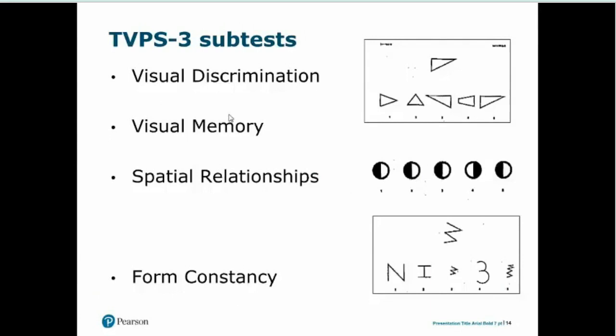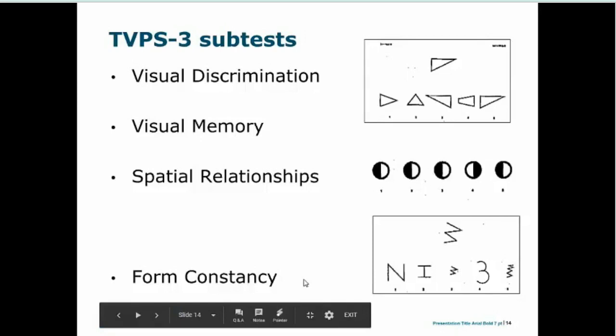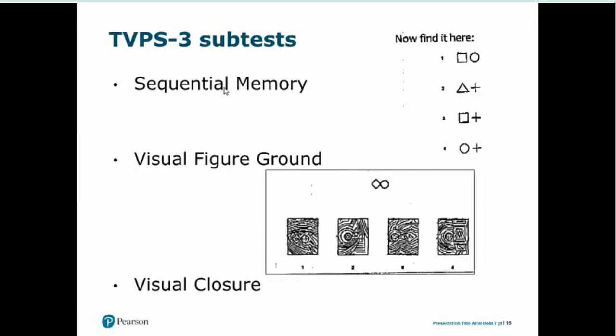The TVPS3 includes visual discrimination — find one the same as the stimulus; visual memory — look at a shape, then find the matching one on the next page; spatial relationships — find the odd one out; form constancy — find the same shape even if altered in size or orientation; sequential memory — finding the correct order of items, which some believe links to reading skills; visual figure ground — finding a shape within a background; and visual closure — which shape would look the same if completed.